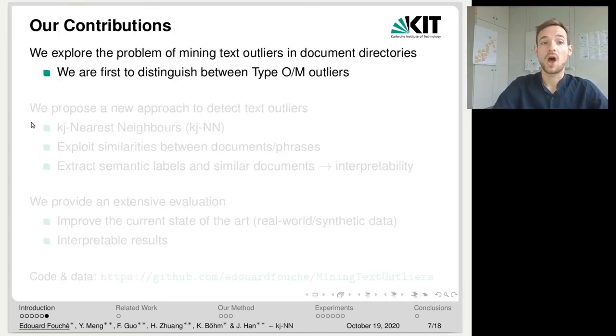So in this paper, our first contribution is to explore the problem of mining text outliers in document directories. And we are, to the best of our knowledge, the first to make the conceptual distinction between type O and type M outliers, so out of distribution and misclassifications.